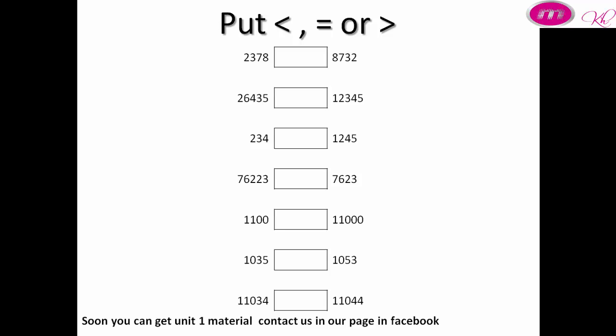One thousand one hundred versus eleven thousand: the second number is more than the first number. One thousand and thirty-five versus one thousand and fifty-three: we look at the first digit on the left — one and one equal, go to the right — zero and zero equal, go to the right — three and five, so the second number is more than the first number. Example: eleven thousand and thirty-four versus eleven thousand and forty-four — one one equal, one one equal, go to the right — zero and zero equal, three and four, the first number is less than the second number.